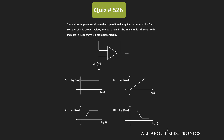In this question, we have been given that for a non-ideal op-amp, its output impedance is equal to Zout. For the given circuit, we have been asked to find the variation in the magnitude of Zout as we increase the frequency f — specifically, the graph which represents the variation in the magnitude of Zout with frequency.